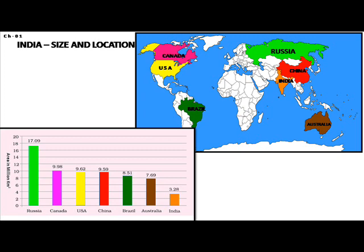There are six other countries that are bigger than India. In order: first, Russia with a geographical area of 17.09 million square kilometers; second, Canada at 9.98 million square kilometers; third, United States of America at 9.62 million square kilometers; fourth, China at 9.59 million square kilometers; fifth, Brazil at 8.51 million square kilometers; sixth, Australia at 7.69 million square kilometers; and seventh, India at 3.28 million square kilometers.